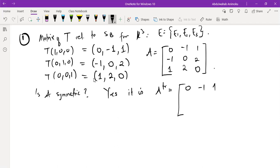So 0, minus 1, 1 becomes 0, minus 1, 1, then minus 1, 0, 2, then we have 1, 2, 0. As you can see, the two matrices are exactly the same. So when this happens,